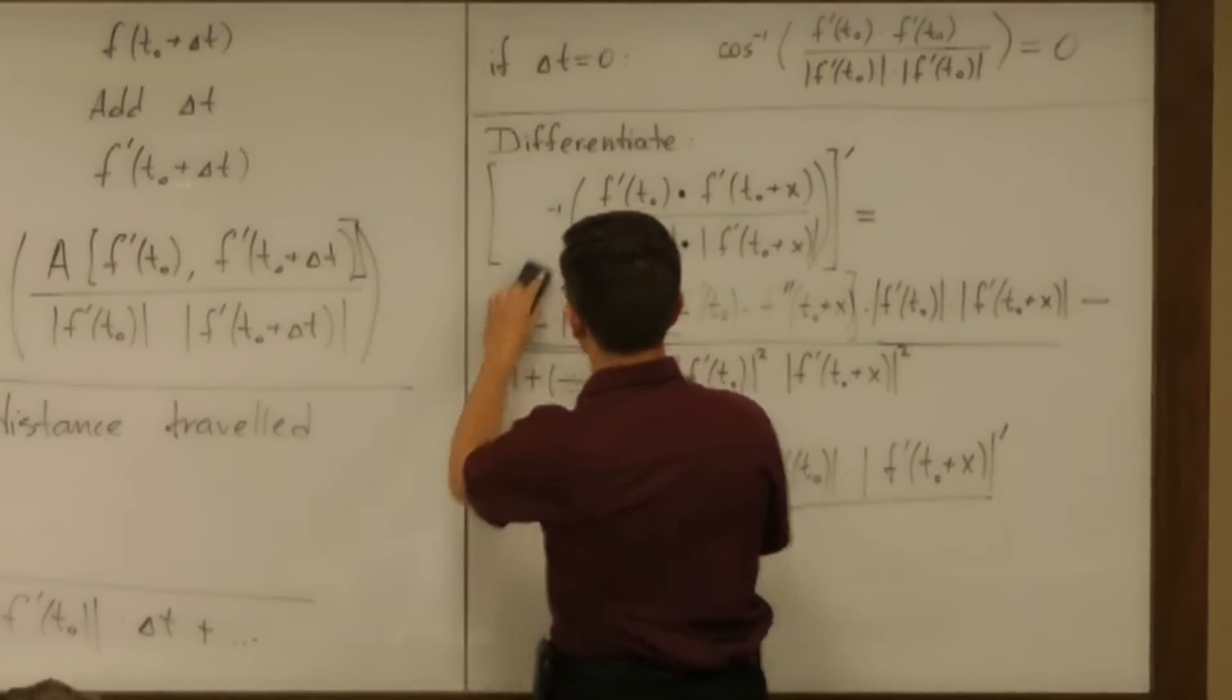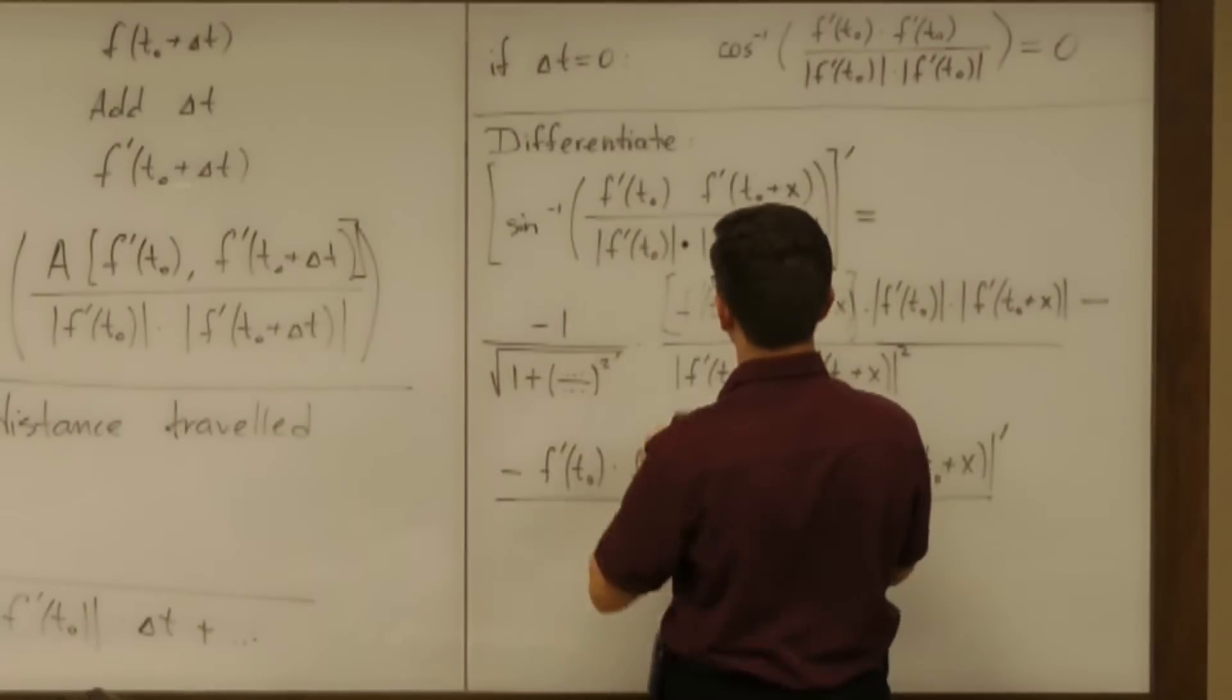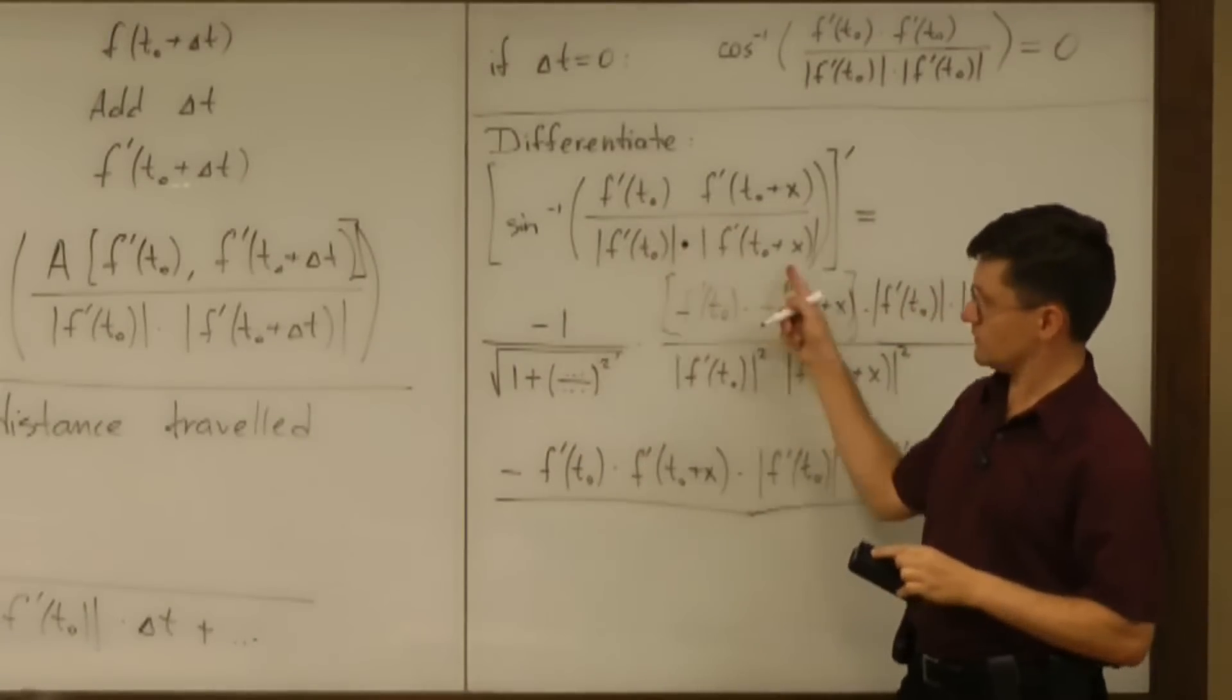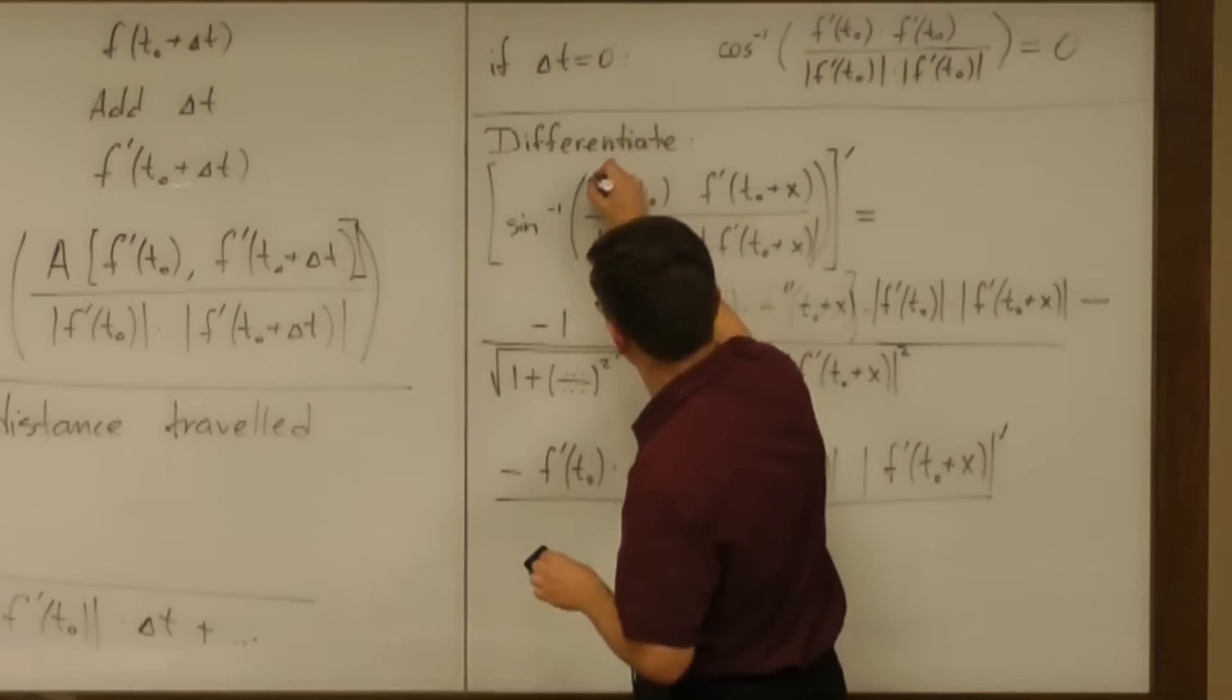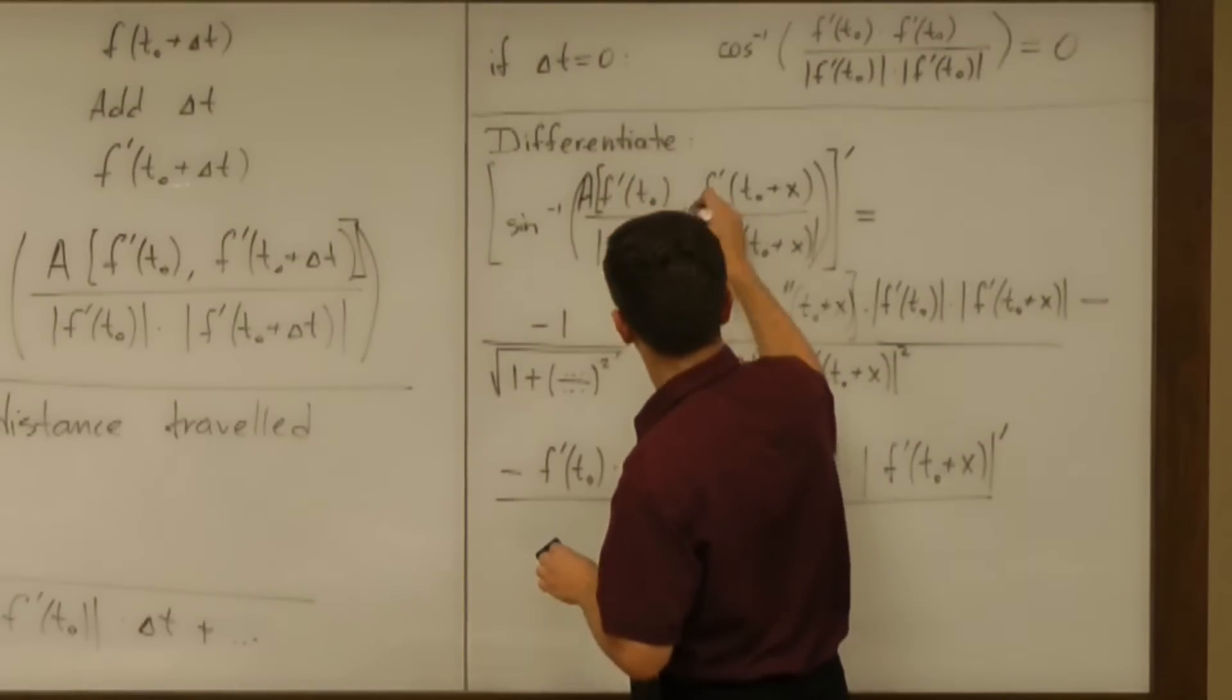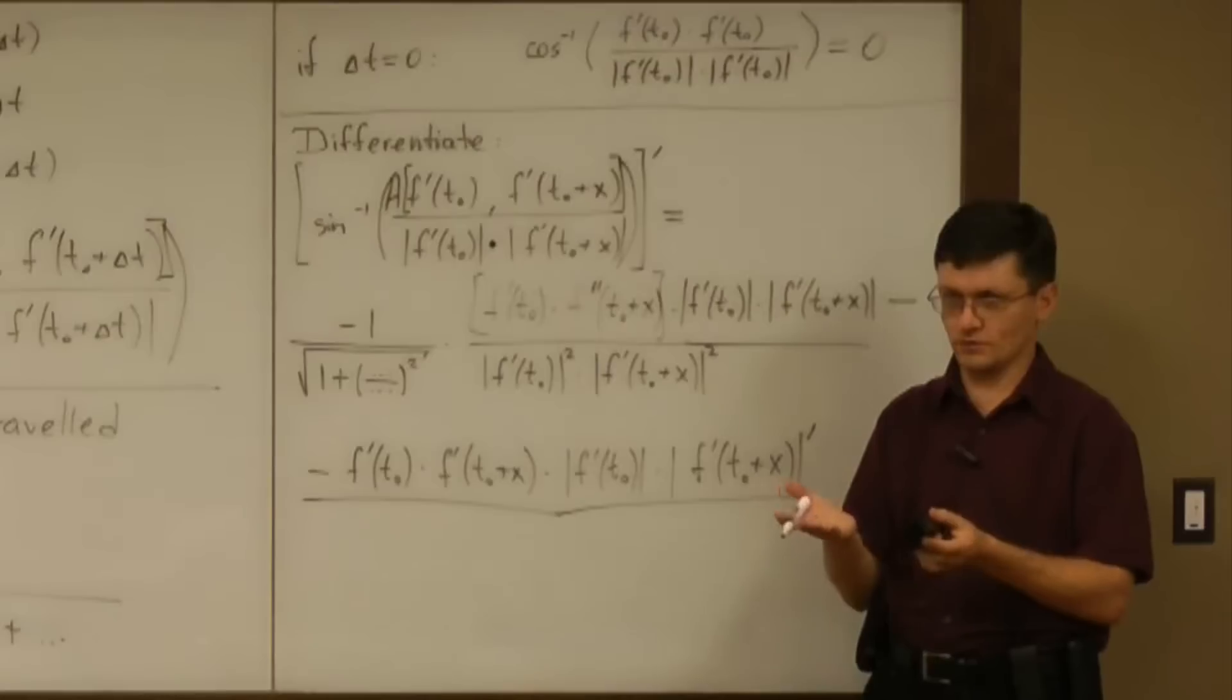Alright, one plus, because we use now sine inverse. And instead of dot product, well, the numerator is still the same. The numerator is the area. Instead of dot product, well, remember area is just another product.